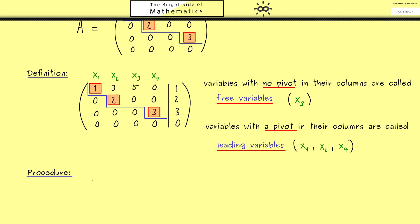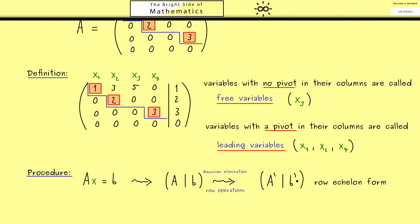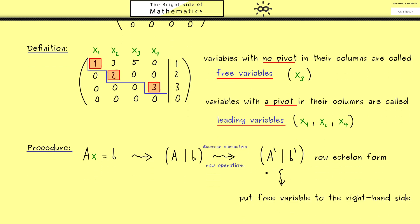Let's write down the whole procedure to solve a system of linear equations. The system is given as Ax = b, and we write it as an augmented matrix. We apply Gaussian elimination with row operations to bring this into row echelon form. At this point we can distinguish free and leading variables. We bring all free variables to the right-hand side, and on the left-hand side what remains is a triangular form. We then perform backward substitution to find the solution set.